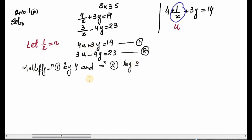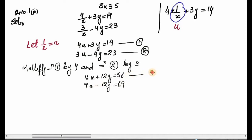When we multiply the two equations, we get: 16u + 12y = 56 (Equation 3) and 9u - 12y = 69 (Equation 4). In the elimination method, when the signs of the term we want to eliminate are opposite — one plus and one minus — we add the two equations.